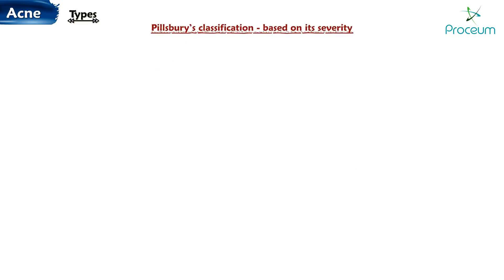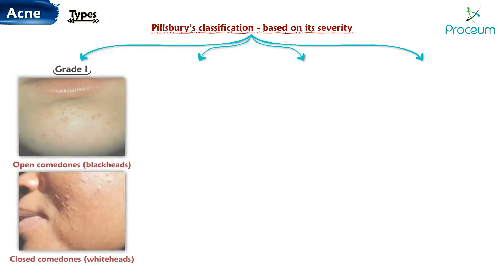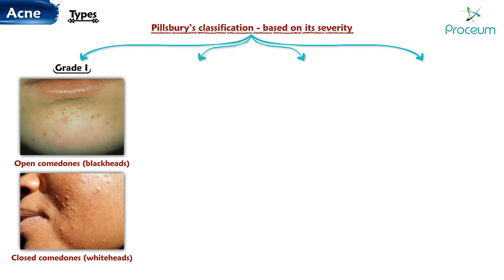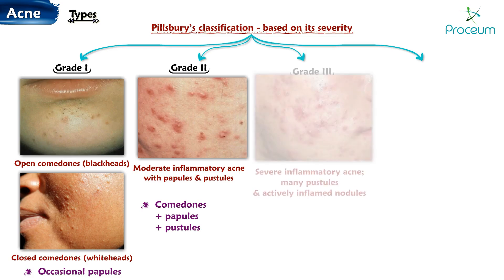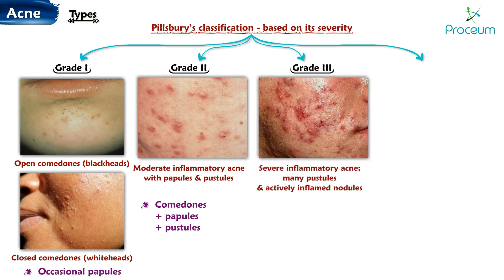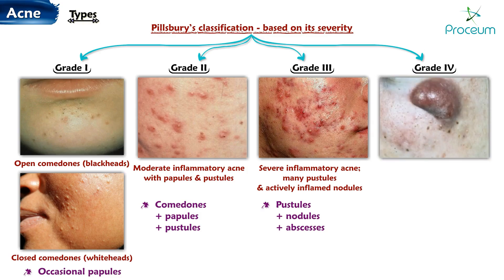Types of Acne. Pillsbury's classification categorizes acne into four grades based on severity. Grade 1: characterized by the presence of comedones (open or closed) and occasional papules. Grade 2: in addition to comedones and papules, this grade includes a higher number of pustules. Grade 3: predominantly marked by pustules, along with the presence of nodules and abscesses. Grade 4: mainly characterized by the presence of cysts, abscesses, and scars.